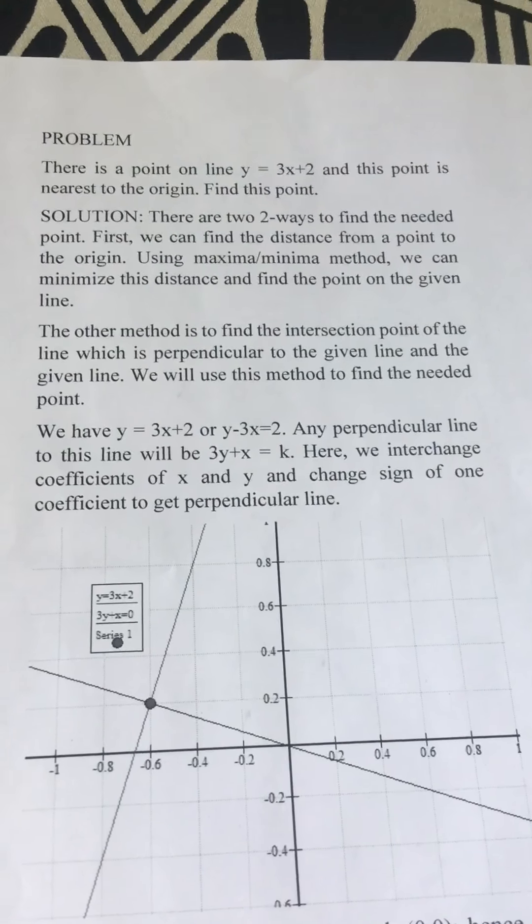The other method is to find the intersection point of the line which is perpendicular to the given line and the given line. That is, we will find out the perpendicular line passing through the given point and find the intersection point of this line and the given line.